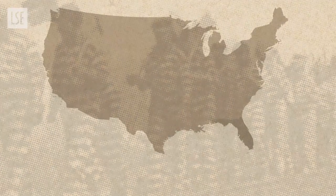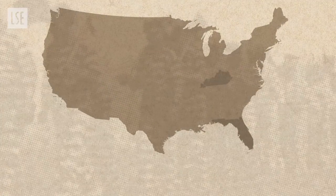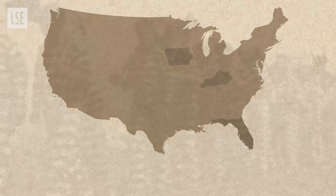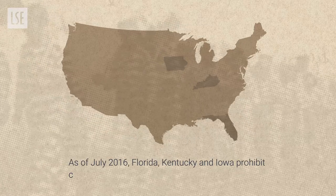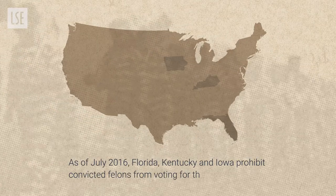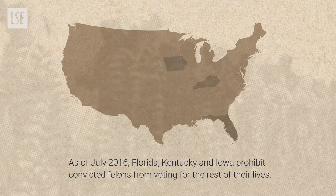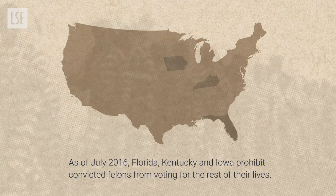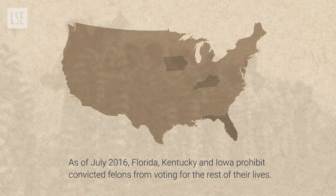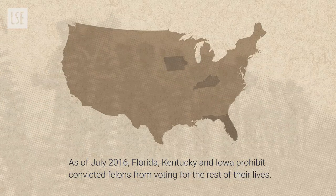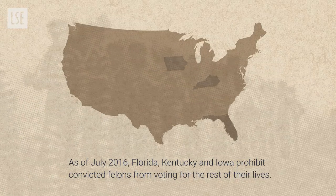Some states have permanent felon disenfranchisement, meaning even after you've served your sentence you're still not allowed to vote for the rest of your life — though that's only a couple of states. Virginia recently eliminated its permanent felon disenfranchisement policy, but in most places you cannot vote while in prison.